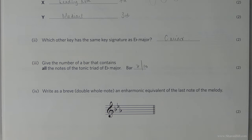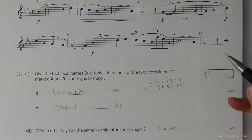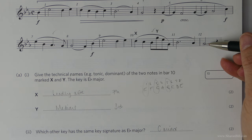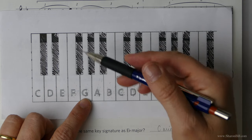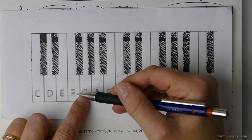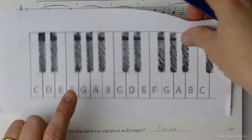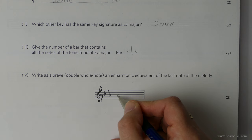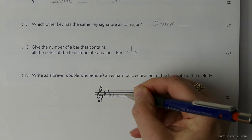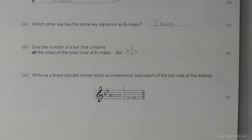Now we're asked to write as a breve or a double whole note an enharmonic equivalent of the last note of the melody. The last note of the melody here is a G. If we just look at that on the piano keyboard it's a good reference point. We could either call that an F double sharp or we could call it an A double flat, just making sure that you get the correct octave. Here is our given note G and so the A double flat would be just above or the F double sharp would just be a step below. Either one of those would answer that question.